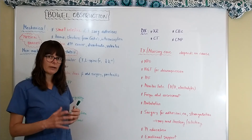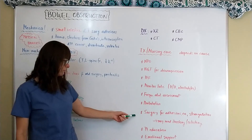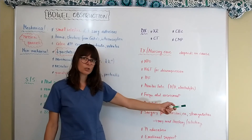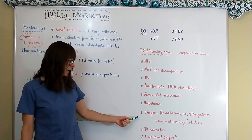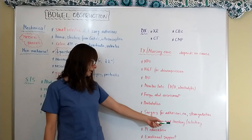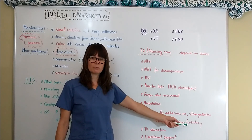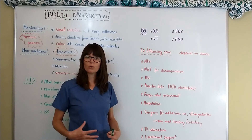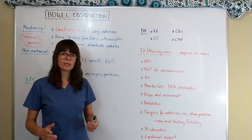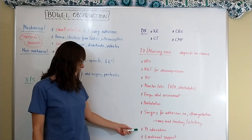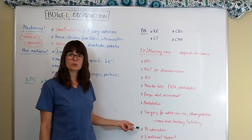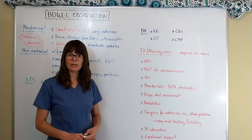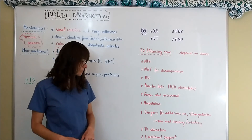Surgery is not always required, but with a complete obstruction, cancer, or adhesions that significantly clamp down on the intestinal lumen, or if there is strangulation from any cause, surgery may be necessary. Surgery might result in an ileostomy or colostomy, which can be temporary or permanent. Patient education beforehand about what to expect and how to care for the ostomy is essential.